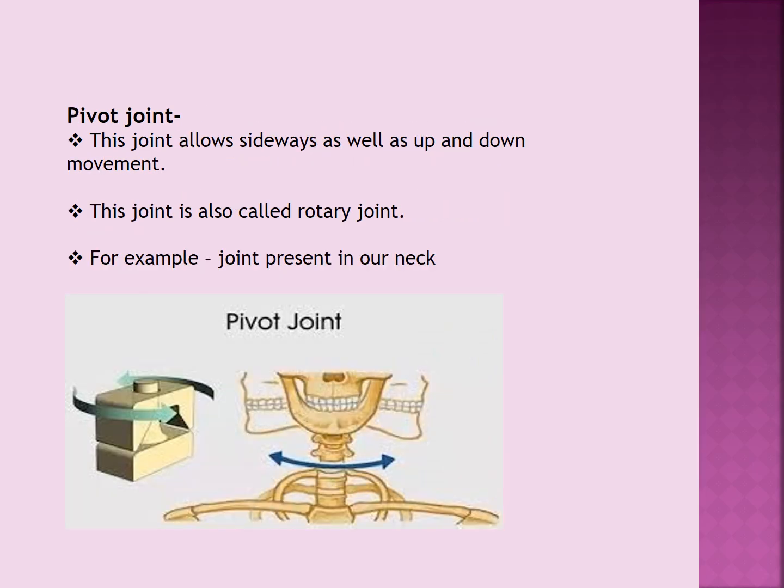Third is pivot joint. This joint allows sideways as well as up and down movement. This joint is also called rotary joint. For example, the joint present in our neck. If you can see in the picture given below, you will notice that the neck joint can be moved up and down as well as sideways. You can try it yourself and see.